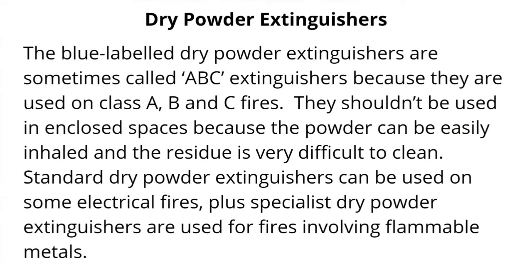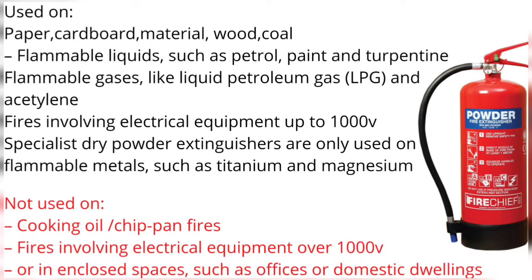The blue-labeled dry powder extinguishers are sometimes called ABC extinguishers because they are used on Class A, Class B, and Class C fires. They shouldn't be used in enclosed spaces because the powder can be easily inhaled and the residue is very difficult to clean. Standard dry powder extinguishers can be used on some electrical fires, and specialist dry powder extinguishers are used for fires involving flammable metals. Used on: paper, cardboard, wood, coal, flammable liquids like petrol, paint, and turps, flammable gases like LPG and acetylene, and fires involving electrical equipment up to 1000V. Specialist dry powder extinguishers are only used on flammable metals such as titanium and magnesium. Not used on cooking oil or chip pan fires, fires involving electrical equipment over 1000V, or in enclosed spaces such as offices or domestic dwellings.